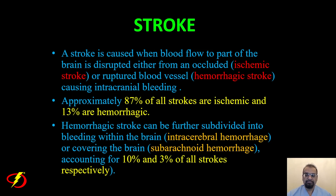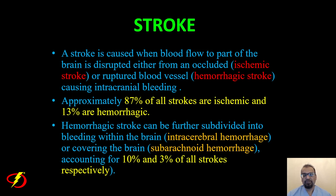Hemorrhagic stroke can be further subdivided into bleeding within the brain — intracerebral hemorrhage — or bleeding covering the brain — subarachnoid hemorrhage. Chapter 6, which will correspond to lecture 6, will specifically discuss hemorrhagic stroke. Hemorrhagic stroke accounts for 13% of all strokes: intracerebral hemorrhage accounts for 10% and subarachnoid hemorrhage accounts for 3% of all strokes, respectively.